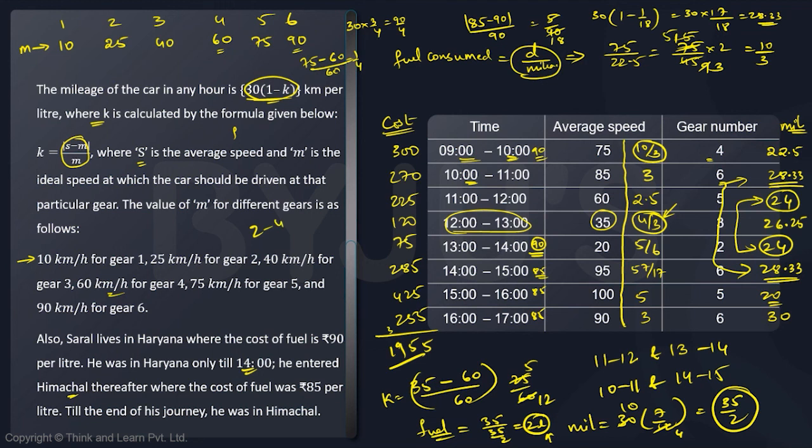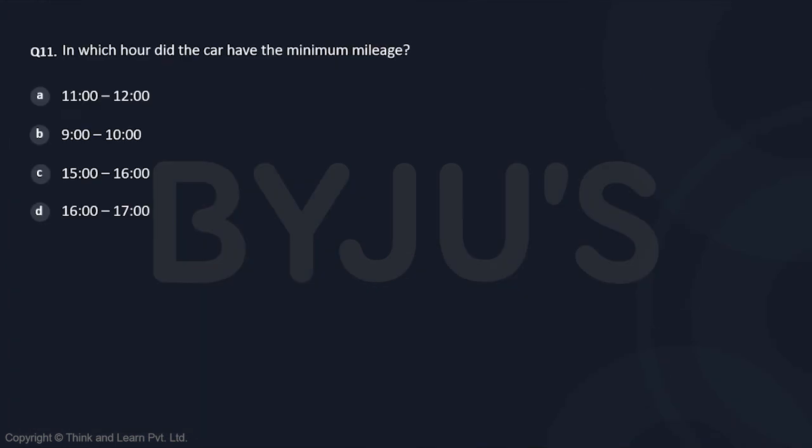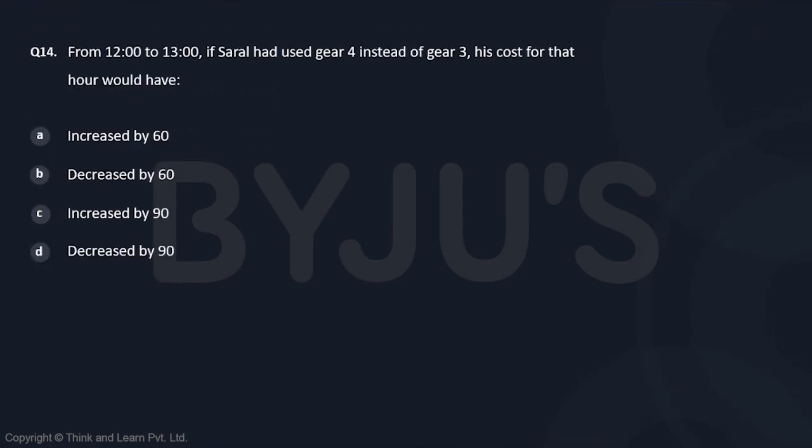So extra value is 2 - 4/3, which is 2/3 liters. Now what is the cost of the fuel? 90 rupees per liter. So 2/3 liters times 90 will be my extra cost, which is 60 rupees. So the cost increased by 60 rupees, that is your answer. If you quickly go back to that question, the answer should be increased by 60, which is option A.